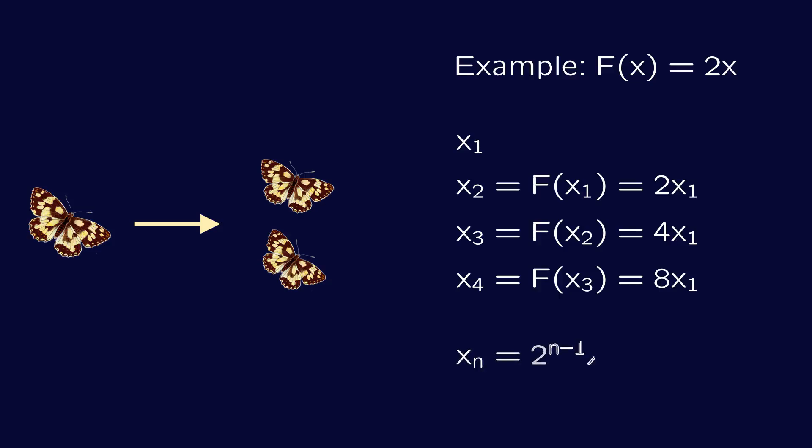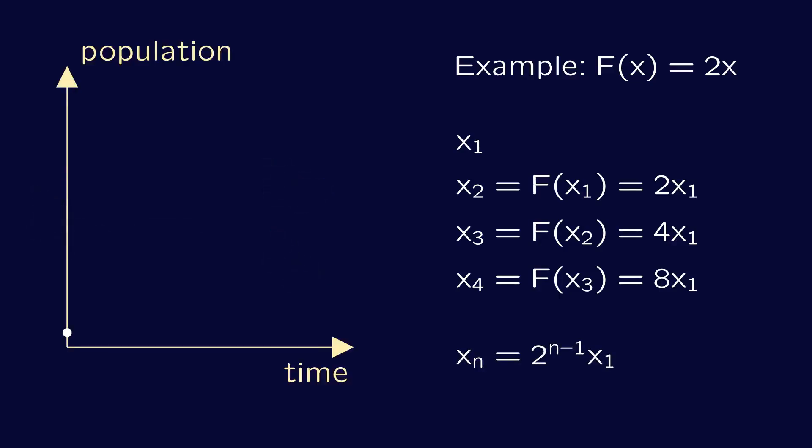This is a perfect example of exponential growth. It may be a good model if the population is small compared to available food and other resources, but clearly a population can't keep growing like this forever.